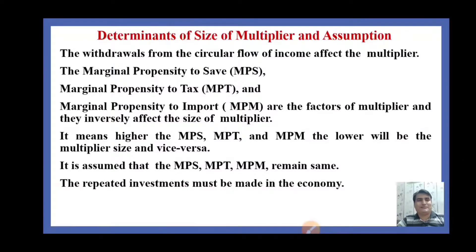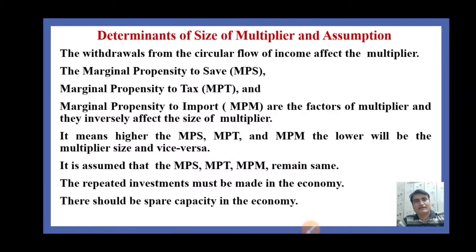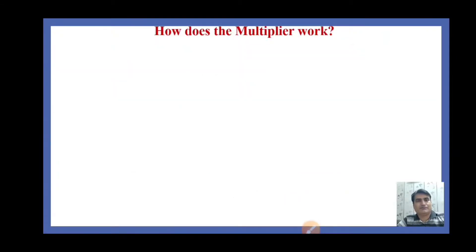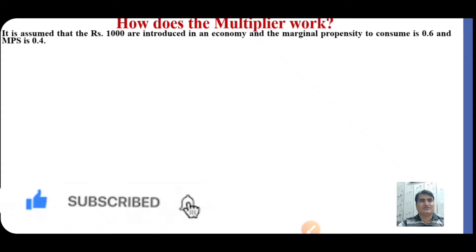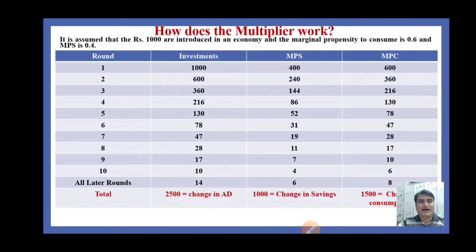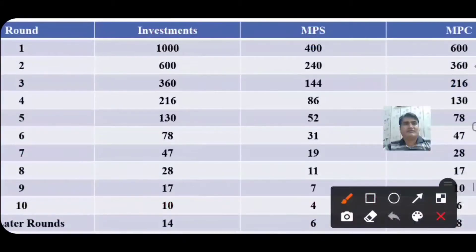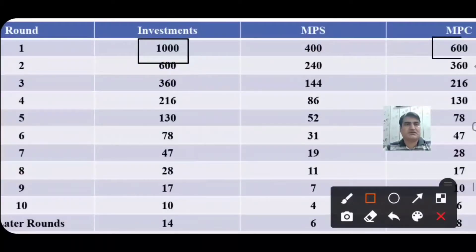It is also assumed that repeated investments must be made in the economy, and there should be spare capacity in the economy. To illustrate how the multiplier works: assume Rs. 1000 are introduced into an economy, the marginal propensity to consume is 0.6, and the marginal propensity to save is 0.4. This means 600 are consumed and 400 are saved. We are making an initial investment of 1000, out of which 600 is spent on the purchase of goods and services and 400 is saved.